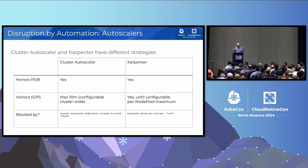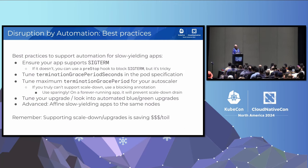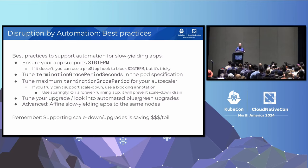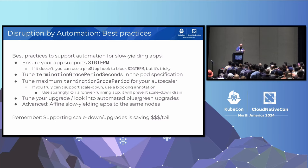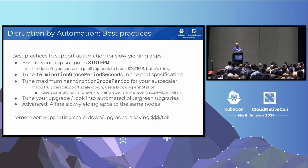Obviously if these workloads yield slowly, nodes are going to be slow to be drained. Both autoscalers have a magic annotation where you can say 'don't evict me ever.' So here are a few best practices for slower-yielding apps: ensure your app supports SIGTERM in some way — if you want to support automation, you need to be cooperative with the eviction system. You can use a pre-stop hook to block SIGTERM for legacy apps, but it's a little tricky. Tune the termination grace period seconds in the pod spec, and tune the maximum termination grace period seconds for your autoscaler.